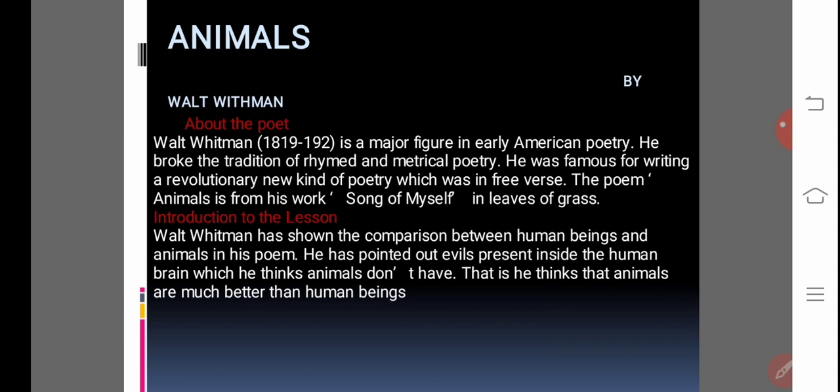This animal poem has been basically taken from Song of Myself, Leaves of Grass. Now, introduction to the lesson. In this lesson, Walt Whitman has shown the comparison between human beings and animals. In his poem, he has pointed out evils present inside the human brain which he thinks animals don't have. That is why he thinks that animals are much better than human beings.